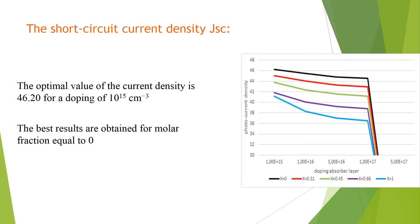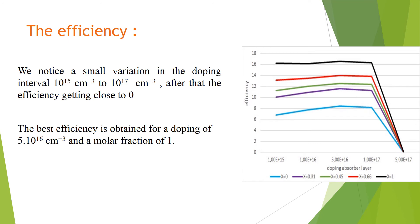For the efficiency, we notice a small variance. When we increase the concentration in the doping interval from 10^15 to 10^17, after that the efficiency drops close to 0. The best efficiency is obtained for a doping of 5×10^16 and a molar fraction of 1.